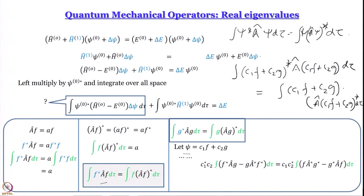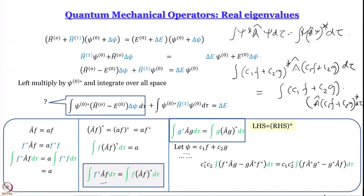Now see: the left-hand side here is the complex conjugate of the right-hand side. c1* c2 versus c1 c2*, f* A-hat g versus f (A-hat g)*, and so on. So point one: LHS and RHS are complex conjugates of each other. Point two: it is an equation, so LHS equals RHS. The only way something equals its own complex conjugate is if it is real — so both sides must be real.